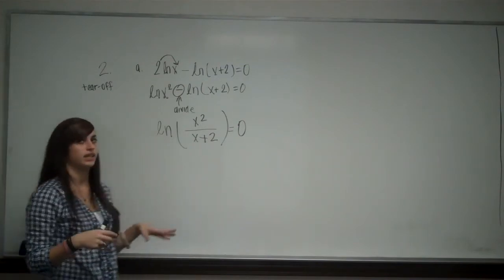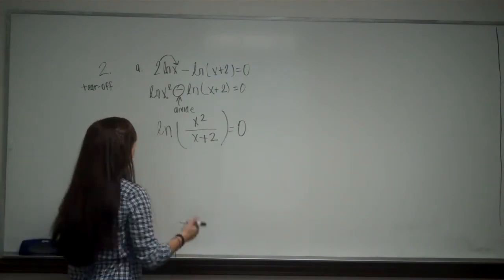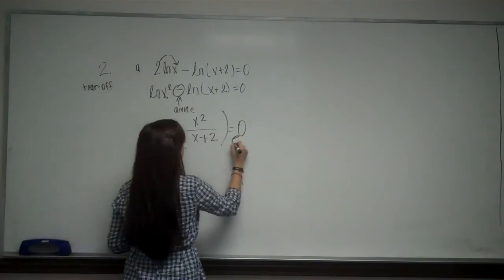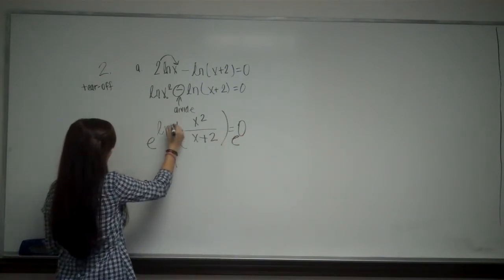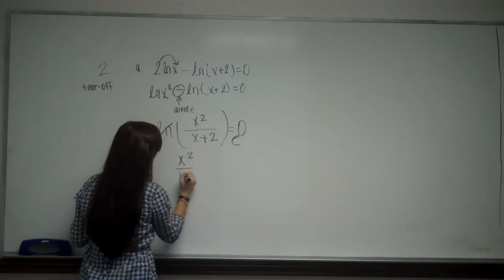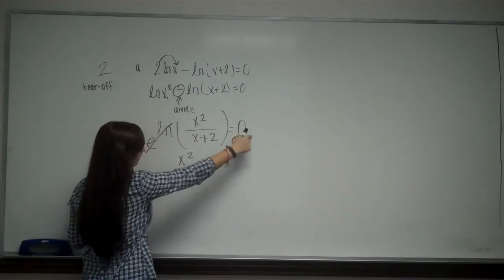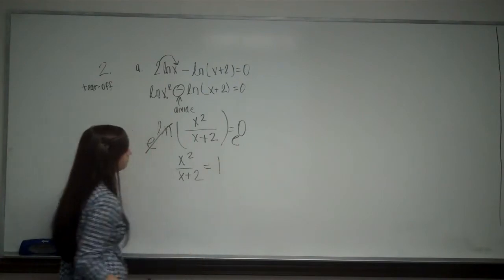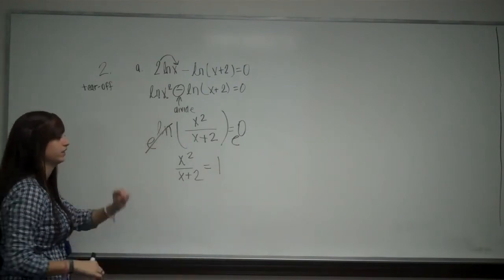So from here, I can take the e of both sides. So I take the e of this and the e of this. So natural log and e cancel each other. So I have x squared over x plus 2, e to the power of 0 is 1. And now I have this equation to solve.